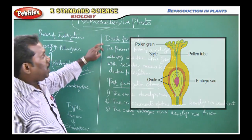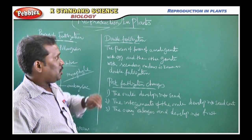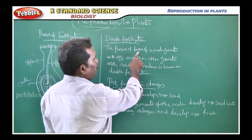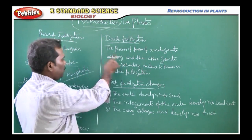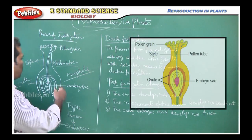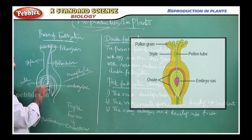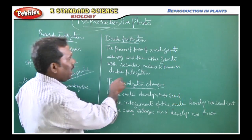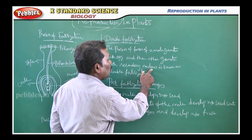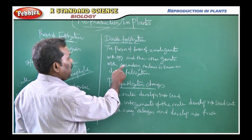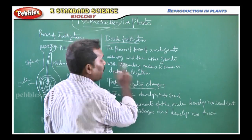That is why it is called double fertilization. Double fertilization is the process of fusion of the male gamete with the egg — first the pollen tube nucleus fuses with the egg, and then the other gamete fuses with the secondary nucleus. This is known as double fertilization.